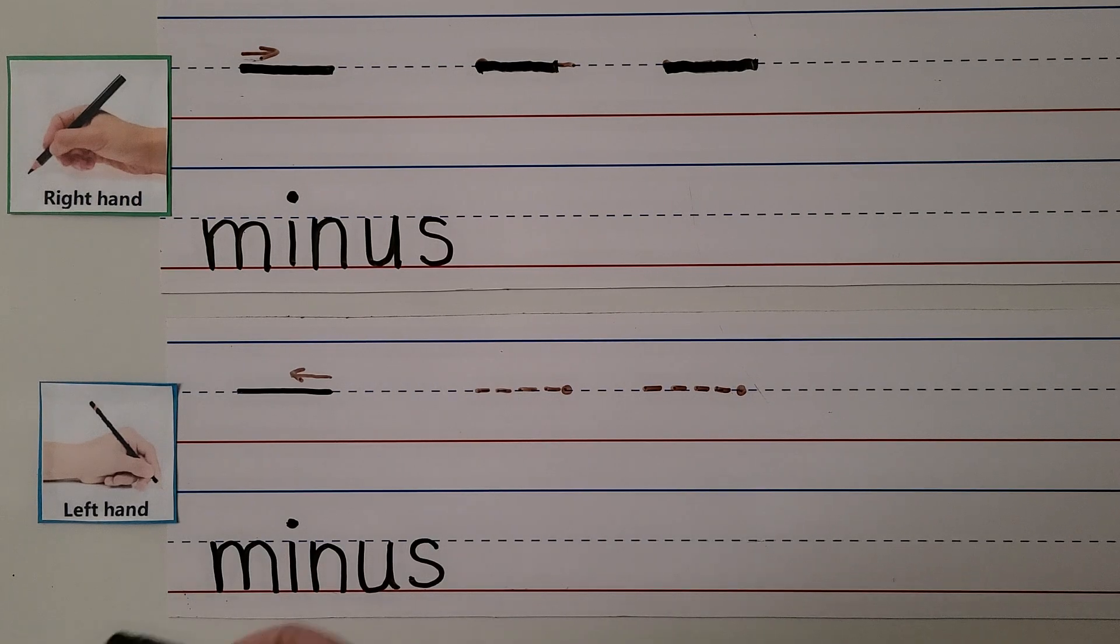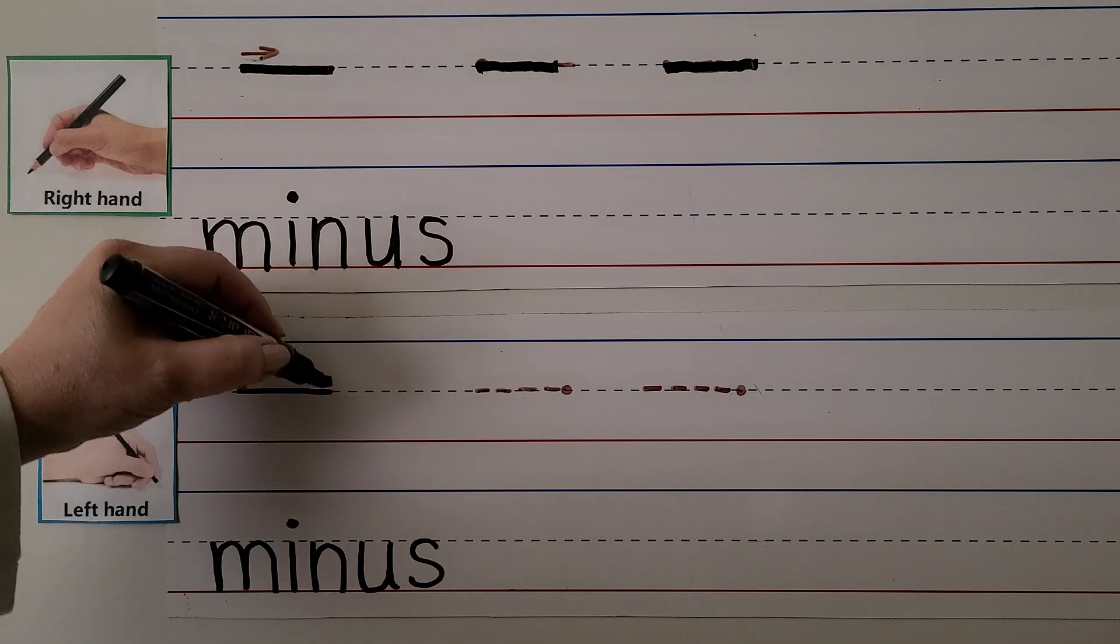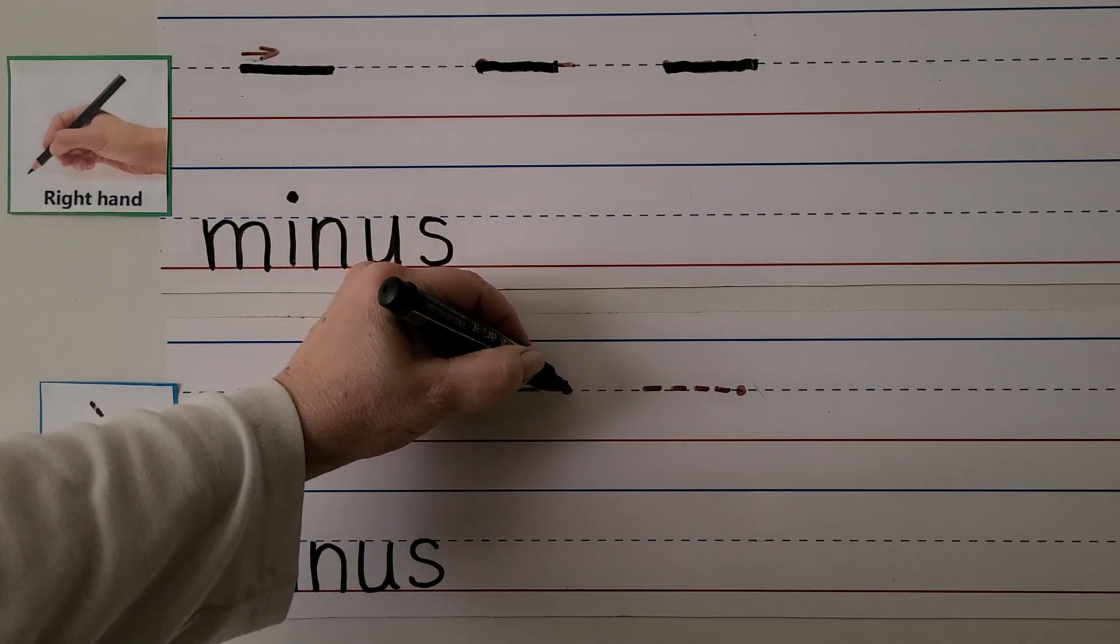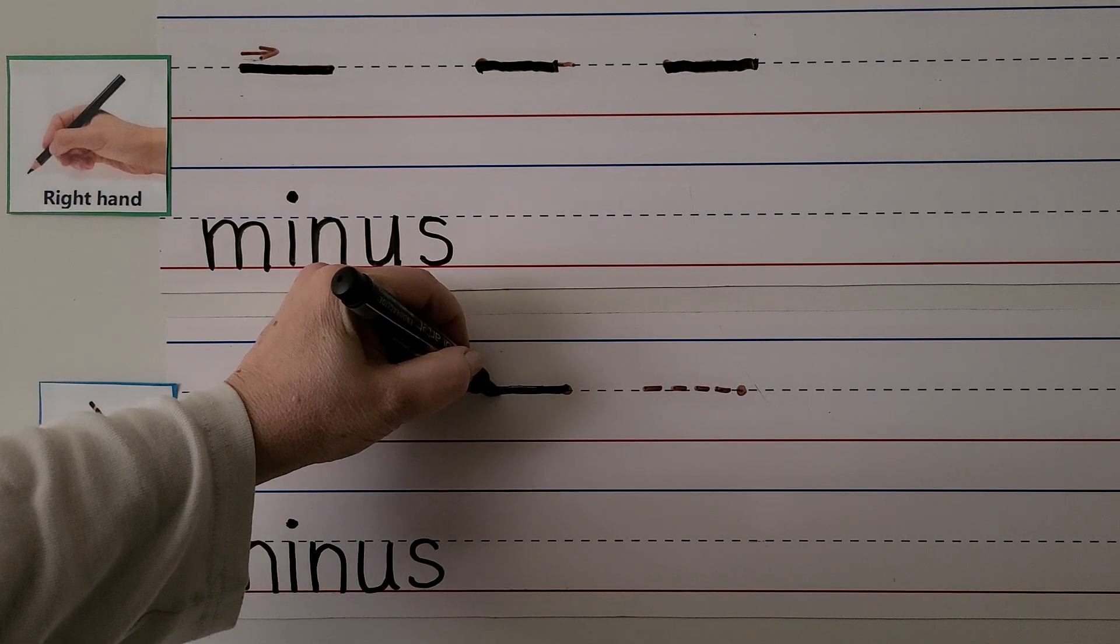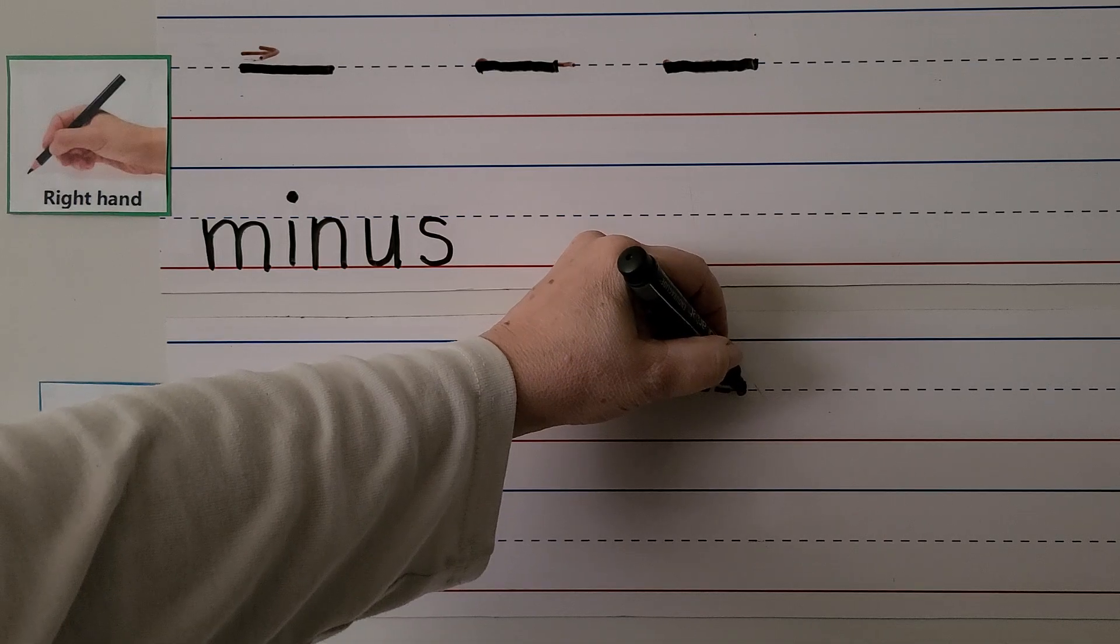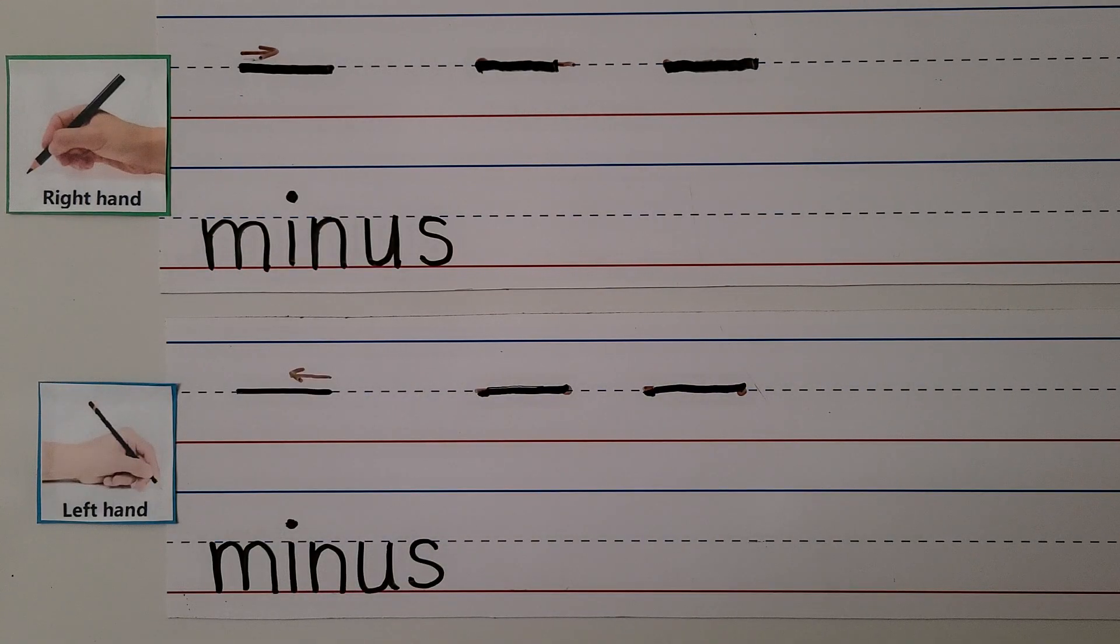We can make the minus symbol with our left hand. We start on this side and pull it towards our hand. We start here on the dotted line and pull it towards our hand to make a minus sign.